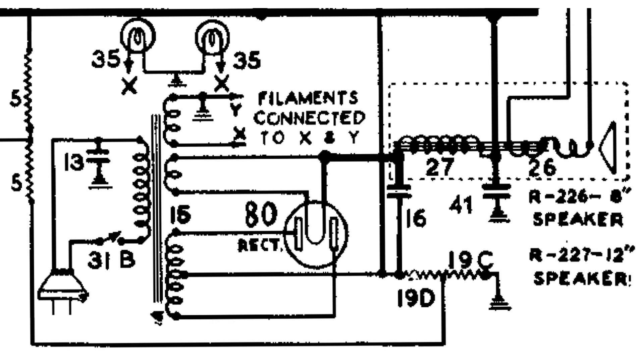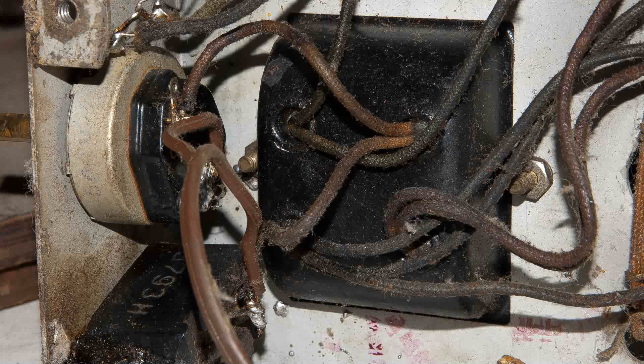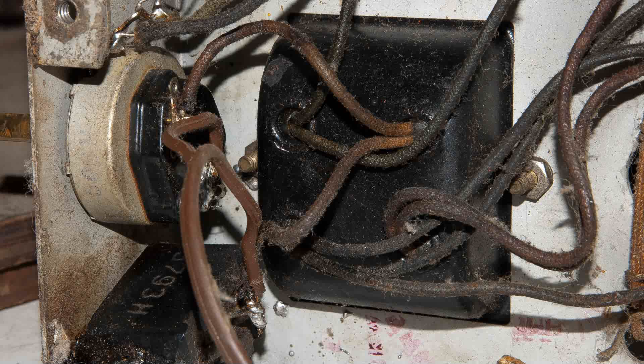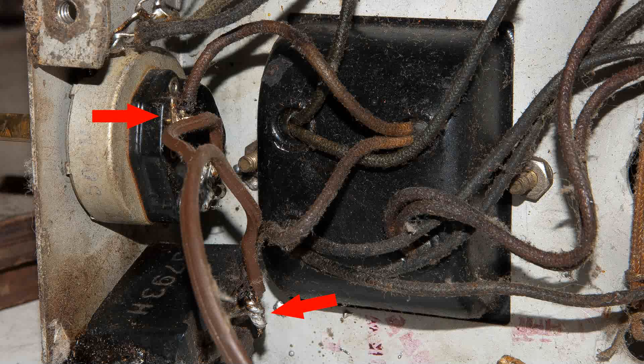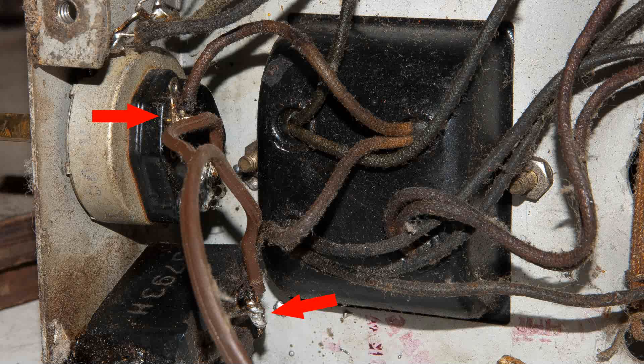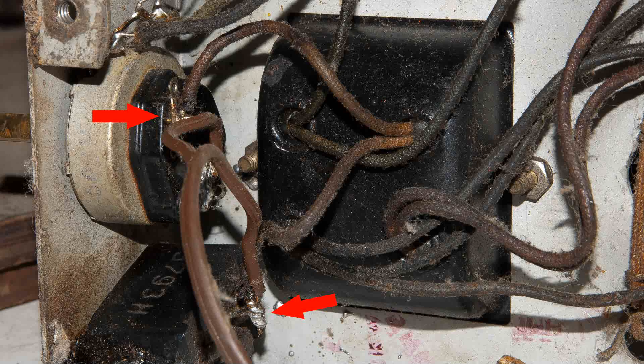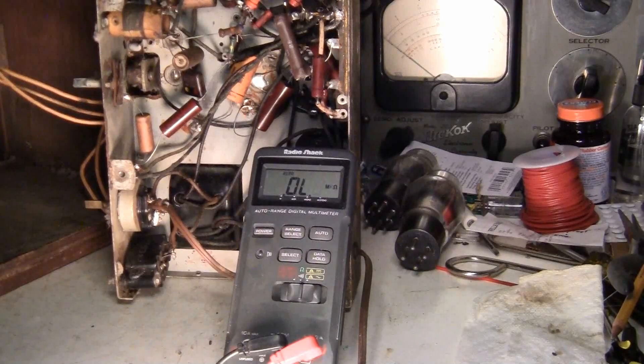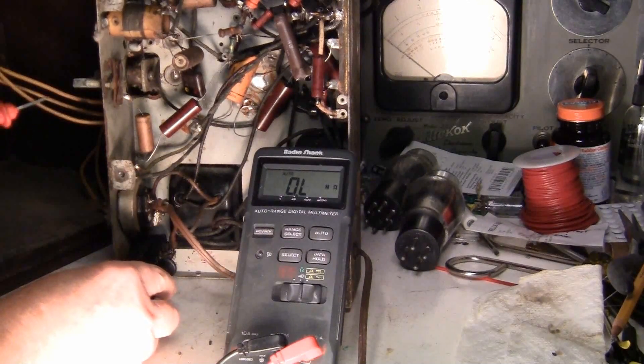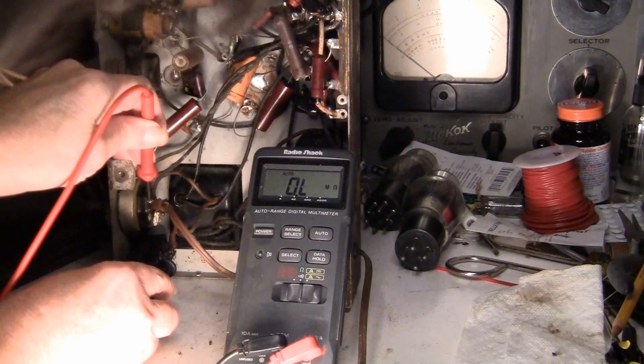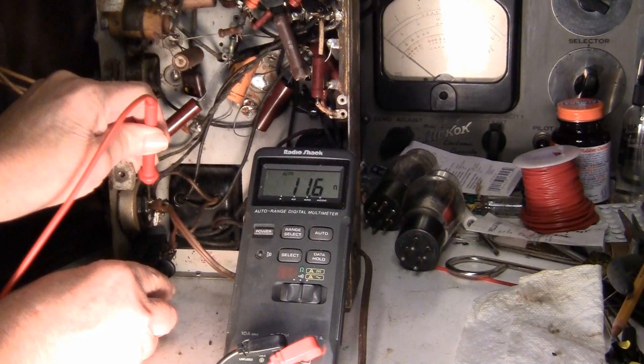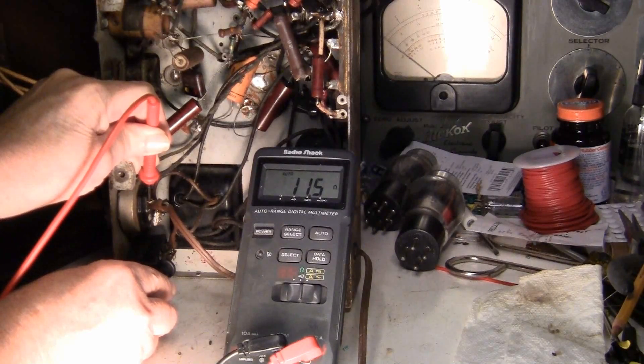There's no particular order that you have to do this in, but I'm going to start here with the primary of the power transformer. Here's a closer picture of that transformer from the inside of the chassis, and here are the two connections that I'm going to put an ohmmeter across to see if the primary is open or not. It should read only a few ohms. Here's one side of the primary and the other side is right here on the switch. That reads about 11.5 ohms. A little over 11 ohms is good.